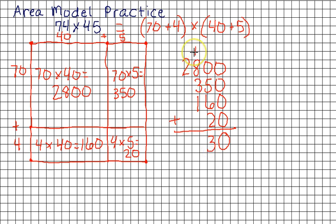8 plus 1 is 9. Plus 3 more is... So we have 9, 10, 11, 12, 13. We have 13 here. Carry the 1, 2, 3. Gives us 3,000. I will not forget my comma. 3,330. So 74 times 45 is 3,330.